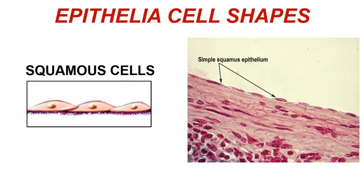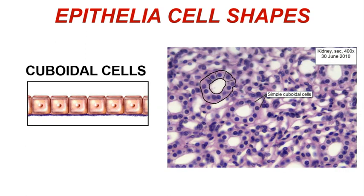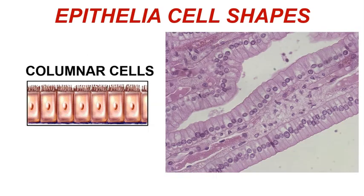Epithelia are also categorized and named by the shapes of the cells present in that epithelial tissue. Squamous epithelia contain flattened cells. Cuboidal epithelia contain cube-shaped cells, where the height of the cell is equal to the width. Columnar epithelia contain column-shaped cells which are taller than they are wide.